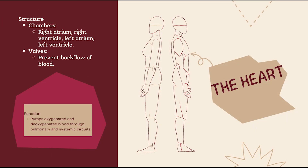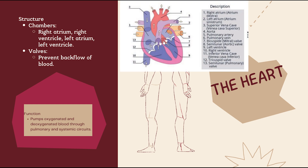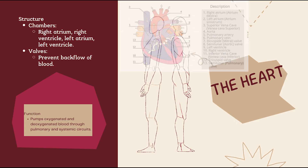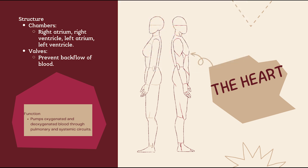The heart is a muscular pump with four chambers: the right atrium and right ventricle, which pump blood to the lungs, and the left atrium and left ventricle, which pump oxygen-rich blood to the body. Valves prevent blood from flowing backward. The heart beats over 100,000 times a day.